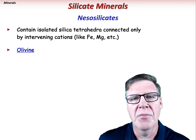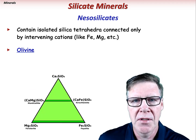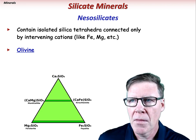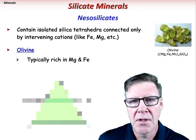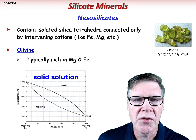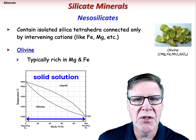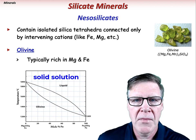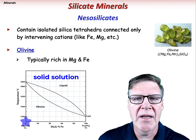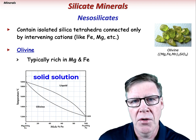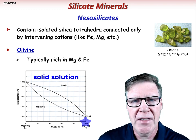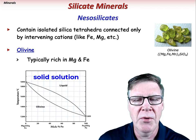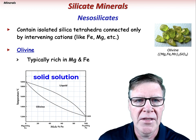Olivine is actually a group of minerals with similar structure but slightly different compositions. The magnesium-rich forsterite and iron-rich fayalite are the two most common varieties. Olivine displays solid solution, meaning there is a range of compositions between forsterite and fayalite — you can have olivine that is 100% magnesium (forsterite), 100% iron (fayalite), or any proportion in between, such as 73% magnesium and 27% iron.